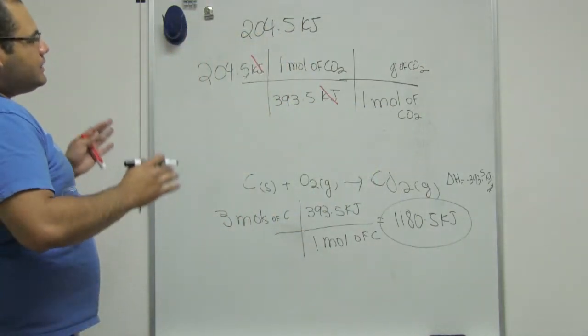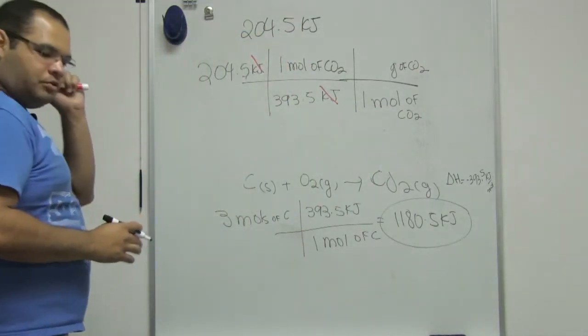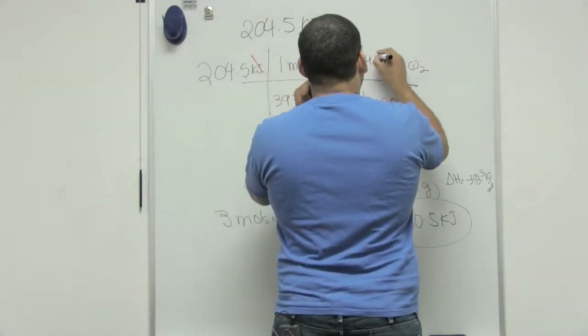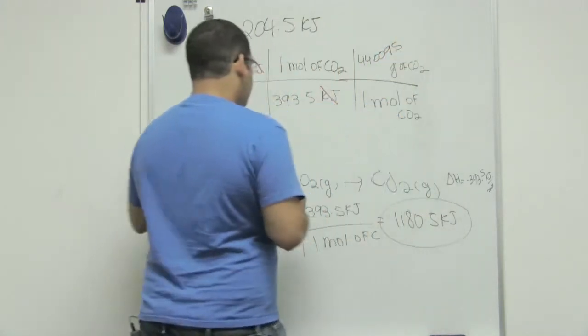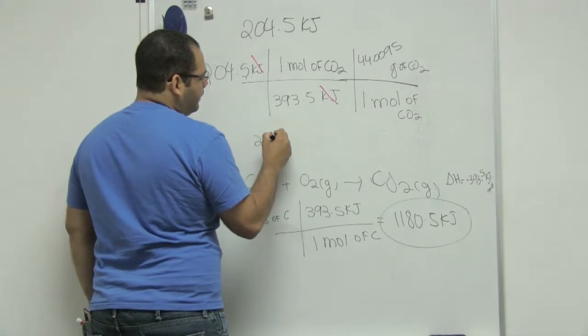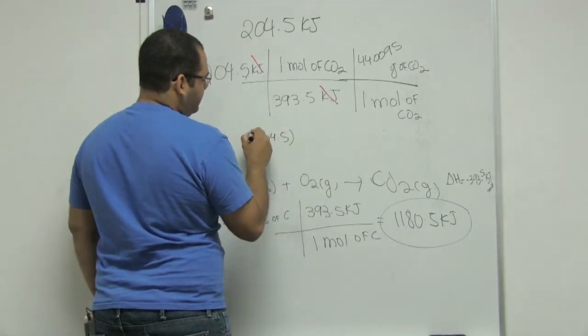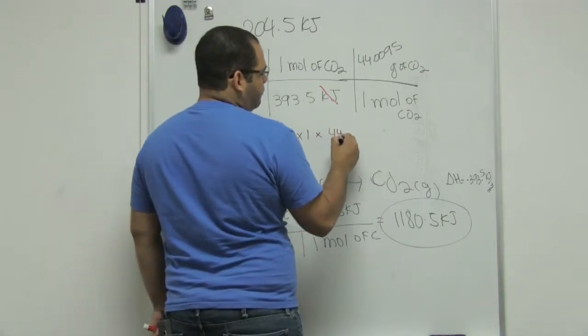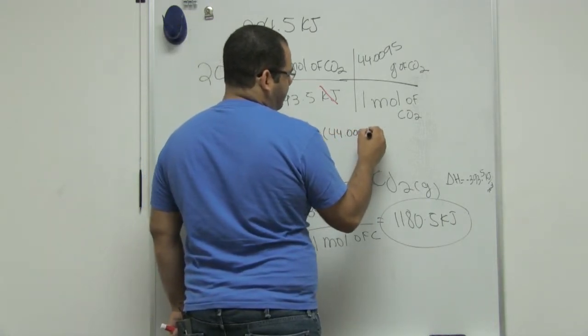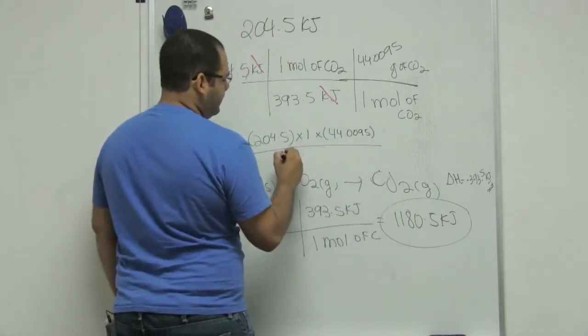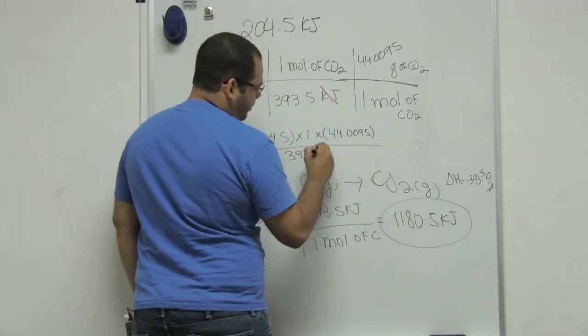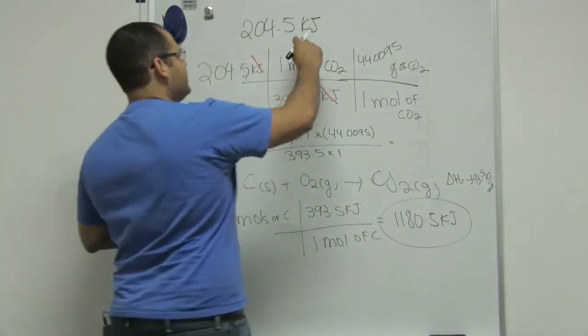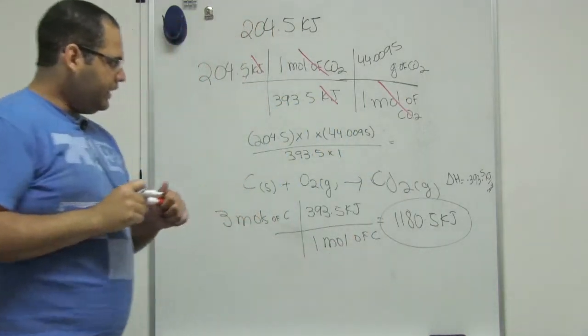And actually the grams of CO2 is the molar mass of CO2. I have it written down here, 44.0095. So if I do 204.5 times 1 times 44.0095 divided by 393.5 times 1, this gives me the answer. Moles and moles here will cancel and I will end in grams.